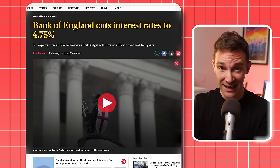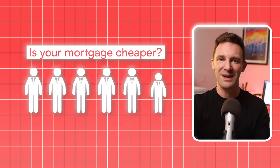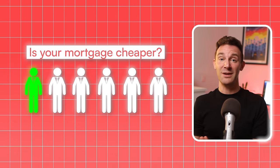So now the Bank of England has cut rates again, leaving them 0.5% lower than they were at their peak. Does that mean your mortgage is about to get cheaper? Well, for about 20% of property owners, the answer is yes. But for everyone else, it's a little bit more complicated than that.